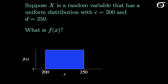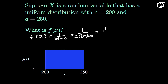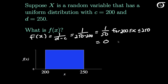Suppose x is a random variable that has a uniform distribution with c equal to 200 and d equal to 250. What is f of x? f of x is equal to 1 over d minus c, which is 1 over 250 minus 200, or 1 over 50. That's only true for values of x between 200 and 250. Outside of that interval, f of x equals 0 otherwise.